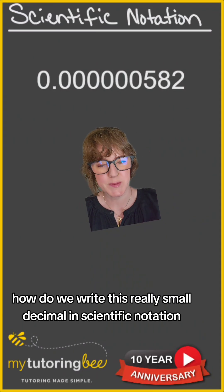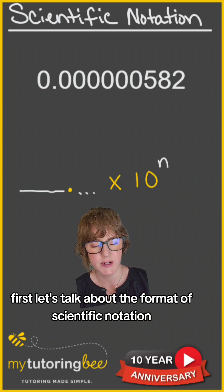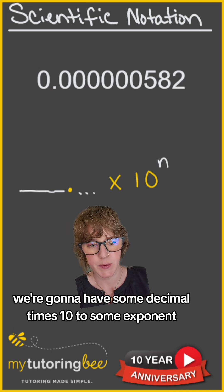How do we write this really small decimal in scientific notation? First, let's talk about the format of scientific notation. We're going to have some decimal times 10 to some exponent.